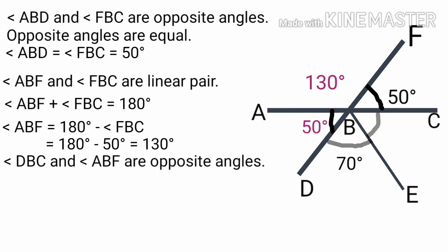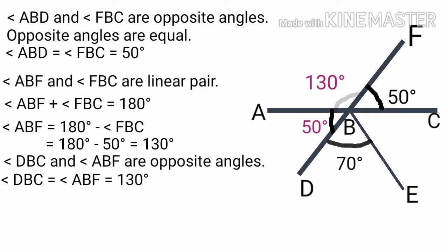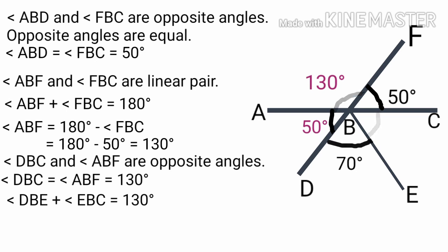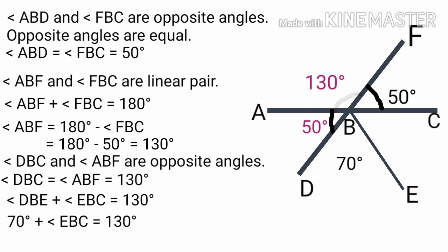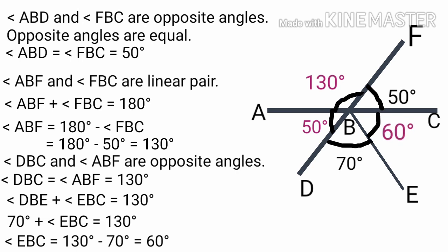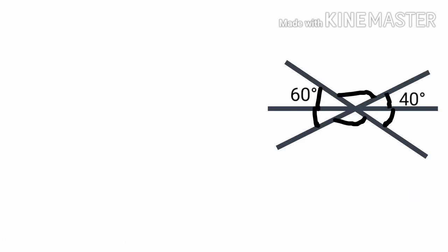Angle ABF is equal to 180 minus FBC. FBC is 50 degrees. Therefore angle ABF is equal to 180 minus 50 degrees, that is equal to 130 degrees. Angle DBC is equal to angle DBE plus angle EBC. Therefore angle DBE plus angle EBC is equal to 130 degrees. Angle DBE is 70 degrees, therefore angle EBC is equal to 130 minus 70 degrees, that is equal to 60 degrees.